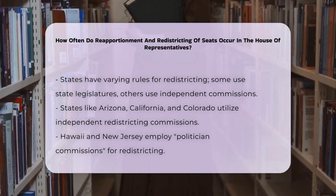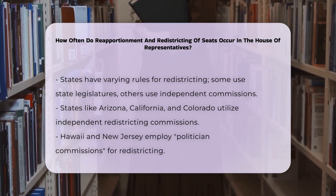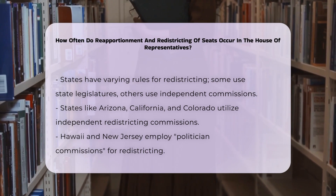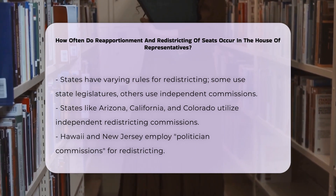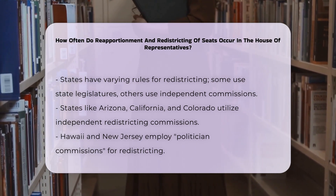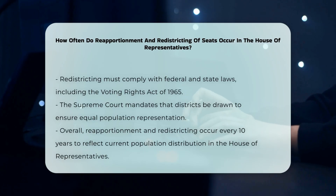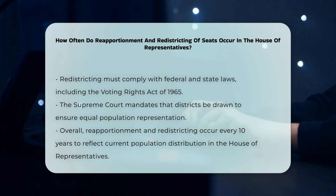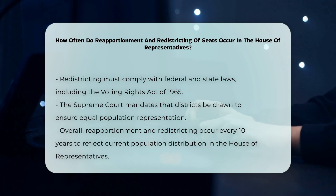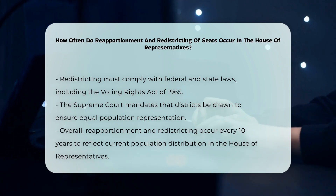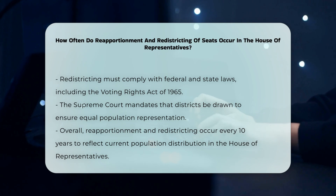Redistricting must comply with various federal and state laws, including the Voting Rights Act of 1965, which protects against racial redistricting plans that would deny minority voters an equal opportunity to elect representatives of their choice. The Supreme Court has also established that states must draw districts that are equal in population as nearly as is practicable.